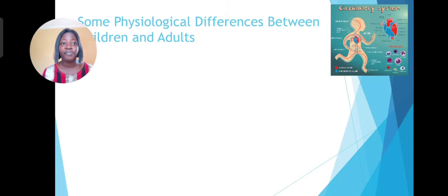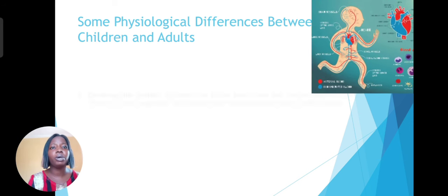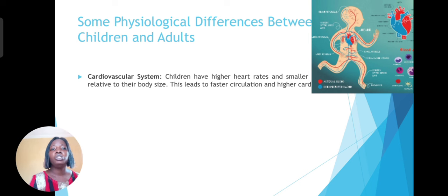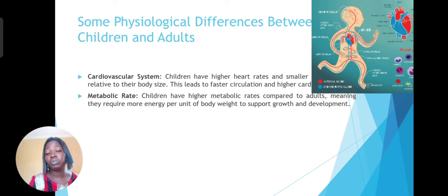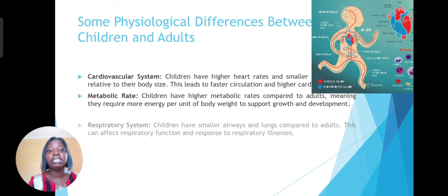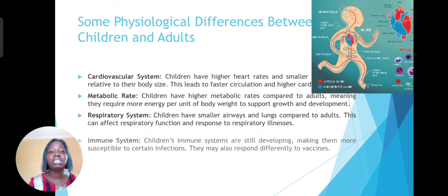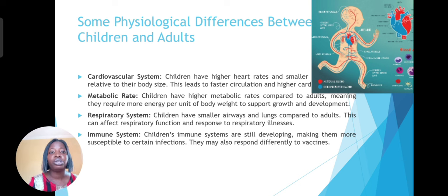Now let's look at some of the physiological differences between children and adults that make children more susceptible to certain kinds of diseases. Number one, we're looking at the cardiovascular system — children have higher rates and smaller blood vessels relative to their body size, which leads to faster circulation than in adults. In metabolic rates, children have higher ones compared to adults, meaning they require more energy per unit of body weight to support growth and development. Children have smaller airways and lungs for their respiratory system, and this affects their response to certain respiratory illnesses.